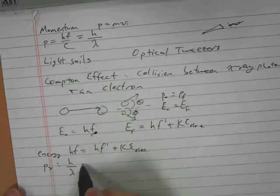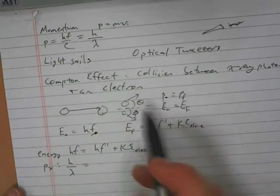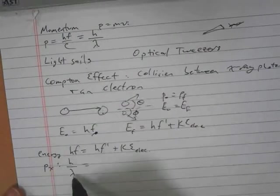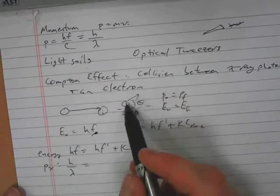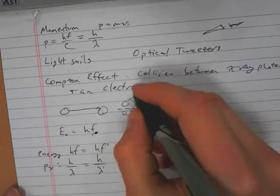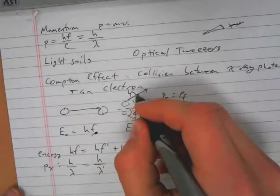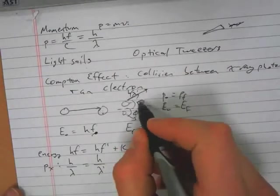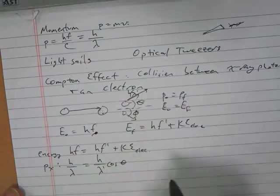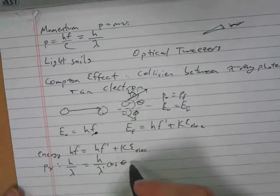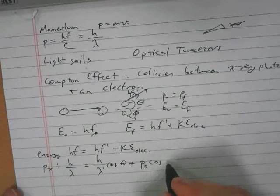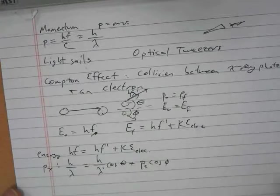So then the final x momentum of the photon, its momentum is h over lambda prime, its new wavelength. So that's the total momentum of the photon. So we have this vector is h over lambda prime, the x component of that is just h over lambda prime times cosine theta. And then the electron has some momentum, momentum of electron also times cosine of phi.